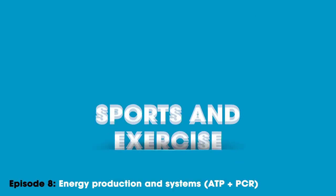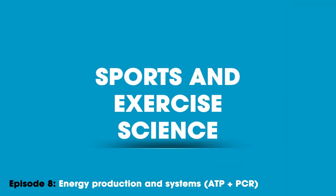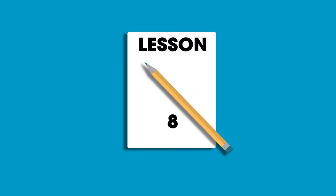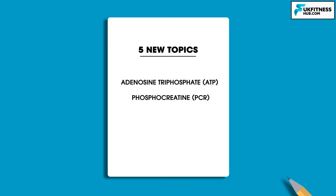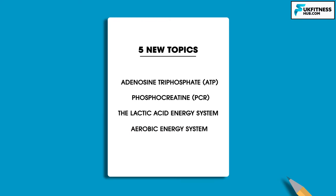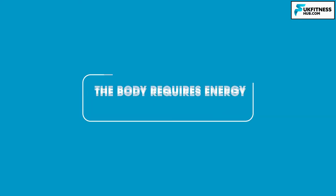Hello and welcome to episode 8 of my sports and exercise science series. We're going to be following on from episode 7 by beginning to learn about 5 new topics. These include adenosine triphosphate, known as ATP, phosphocreatine, known as PCR, the lactic acid energy system, the aerobic energy system, and finally we're going to look at the interaction of different energy systems.